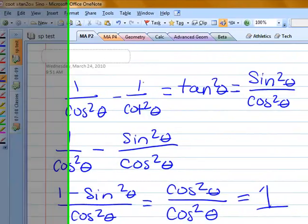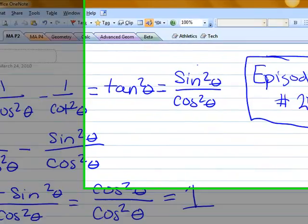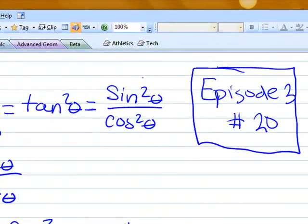Cotangent squared theta is the same thing as tangent squared theta, which from our quotient identities is the same thing as sine squared theta over cosine squared theta.